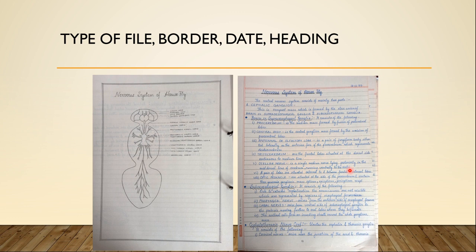I am going to talk about the left side, or the diagram side, first. On this side, you should always make the border first. Students often make the mistake of making the diagram first and then making the border. But in that case, your diagram might be bigger and can cross where your border should be. So if you make your border first, you have a proper estimate of how much space is left for your diagram.